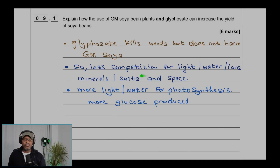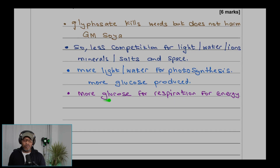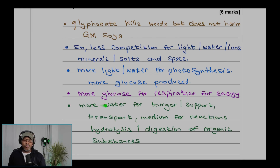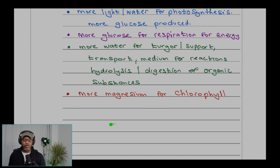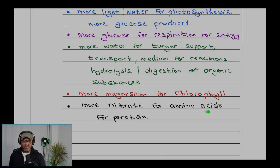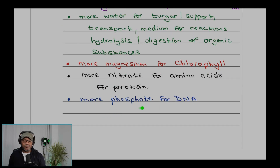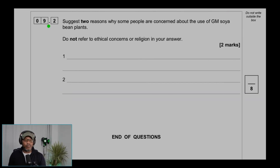More light and water is available for photosynthesis, so more glucose is produced. More glucose is available for respiration for energy. More water supports transport and acts as a medium for reactions such as hydrolysis and digestion of organic substances. More magnesium is available for chlorophyll production, more nitrate for amino acids and protein synthesis, and more phosphate for DNA (deoxyribonucleic acid).